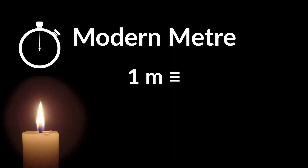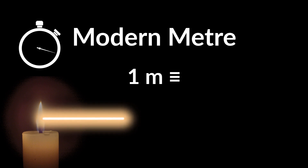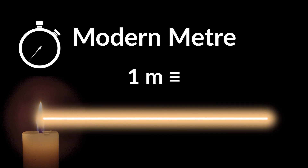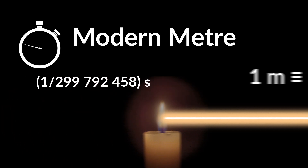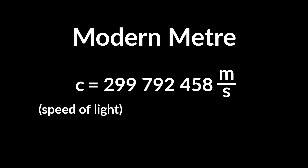Today, a meter is defined as the distance that light travels in 1/299,792,458 seconds. This number is not random — it's the speed of light. Using the universal constant of the speed of light and the already universally constant definition of the second, they were able to define the meter as universally constant.